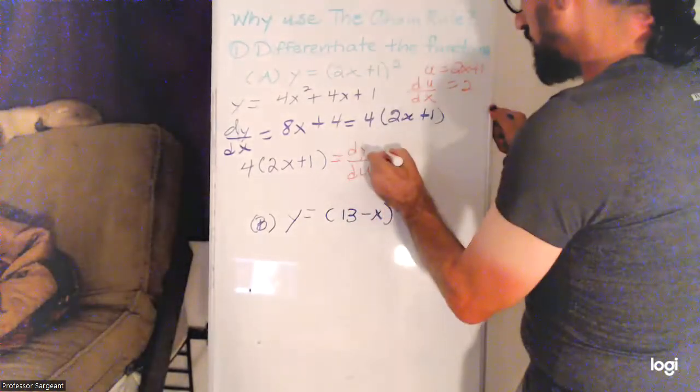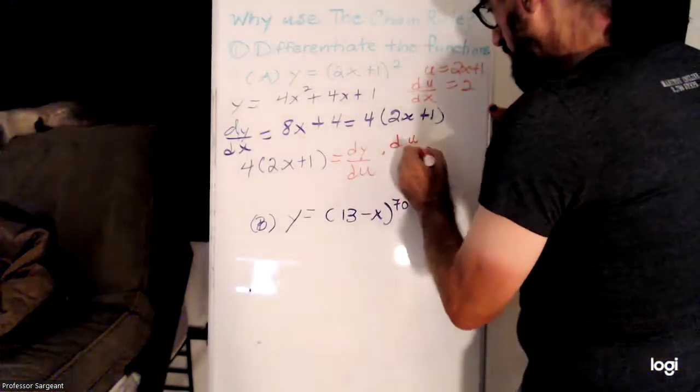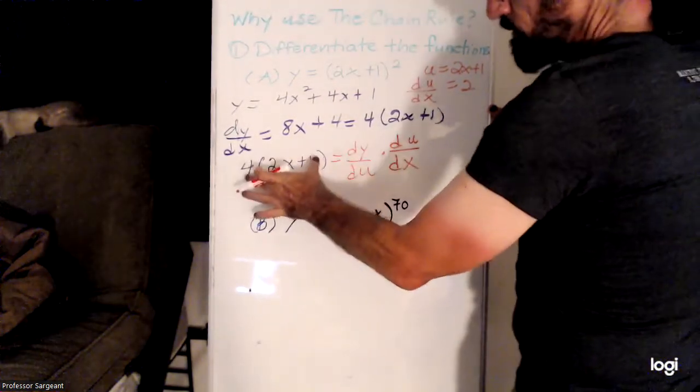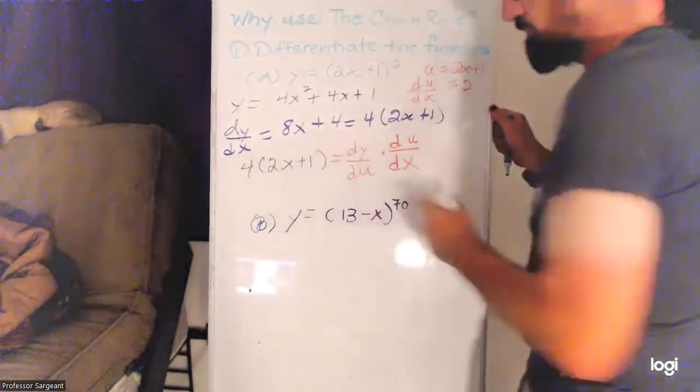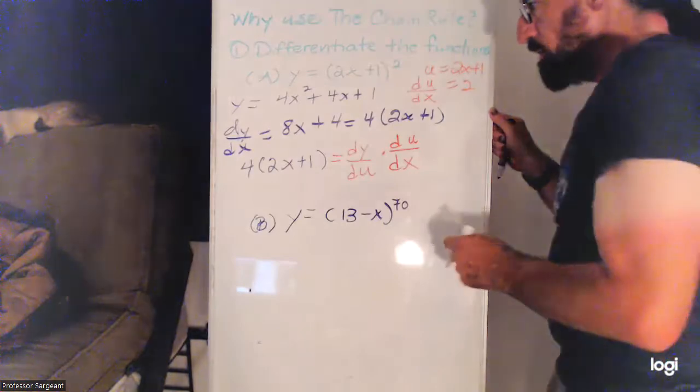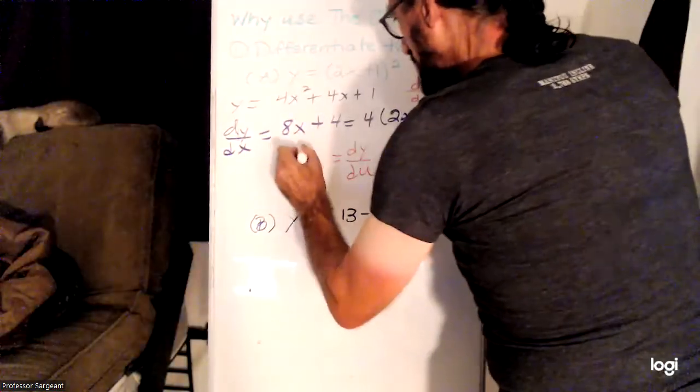...but then we're multiplying it by the derivative of the inside. Instead of 2 times 2x plus 1 we've got 4 times 2x plus 1. That is our chain rule.